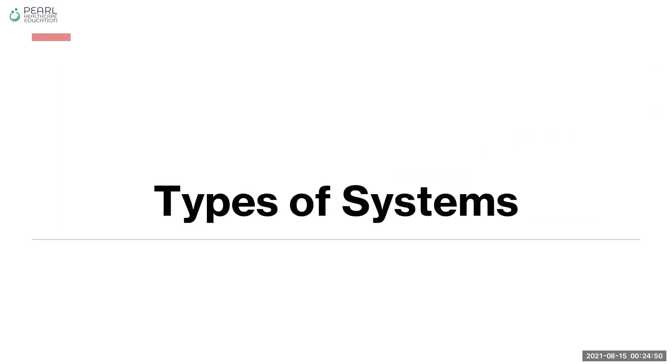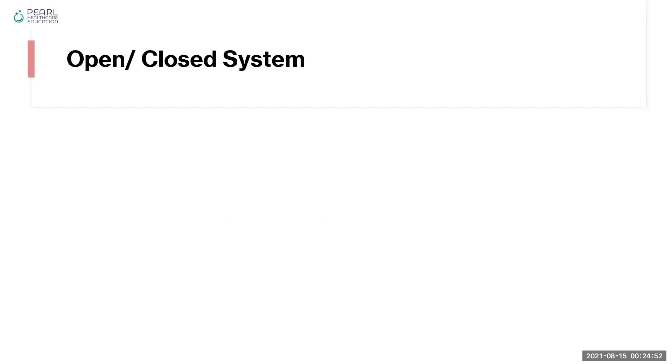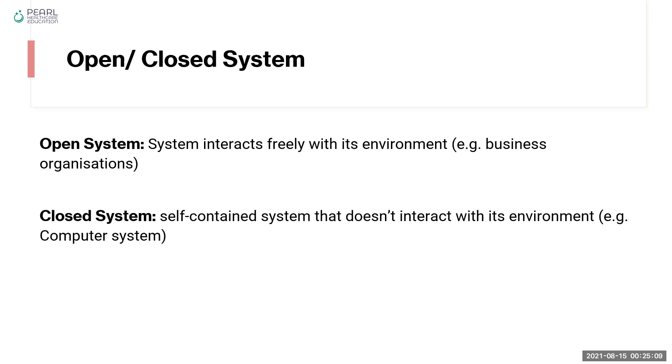There could be various types of systems. You will find examples of open and closed systems. Open systems are those which interact freely with their environment, for example business organizations which work within the environment with other individuals, communities, other organizations. Closed systems are those which are self-contained which do not interact with the environment, for example a computer system which you can place anywhere and it will work on its own but would not interact with other elements of the environment.